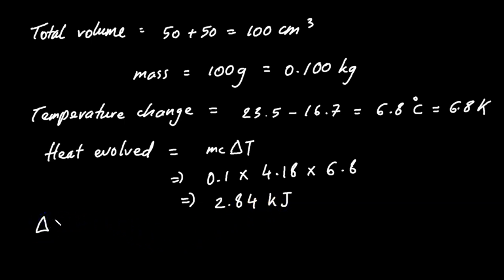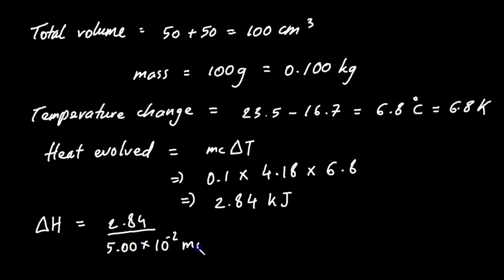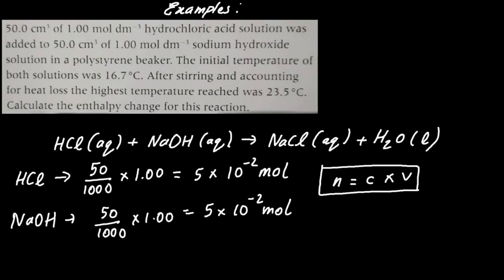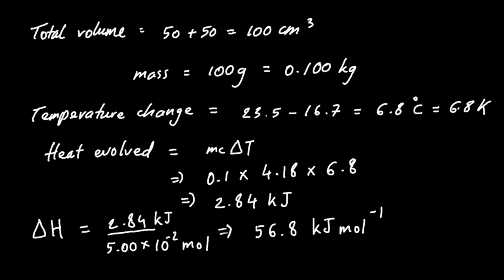The enthalpy change for this reaction is calculated by dividing the heat evolved by the number of moles: 2.84 ÷ (5 × 10⁻²) = 56.8 kJ/mol. Since the temperature increased from 16.7°C to 23.5°C, this is an exothermic reaction, so the enthalpy change is given a negative sign. The final answer is ΔH = −56.8 kJ/mol.